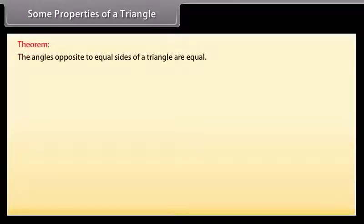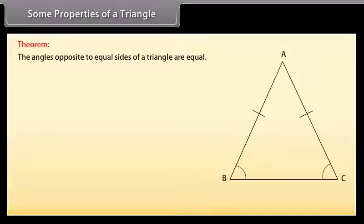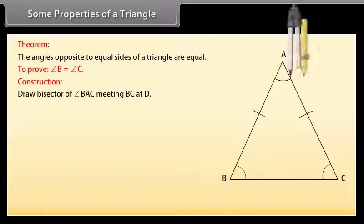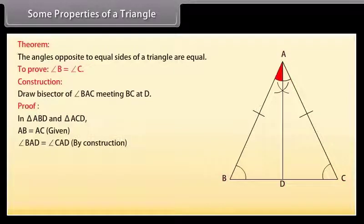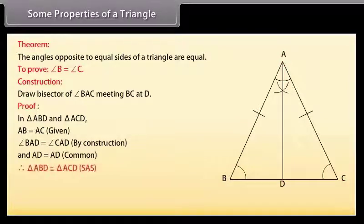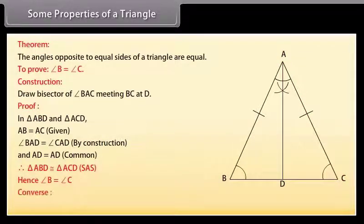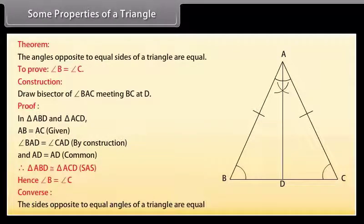Theorem: The angles opposite to equal sides of a triangle are equal. Given is a triangle ABC in which AB is equal to AC. We have to prove that angle B is equal to angle C. Construction: Draw the bisector of angle BAC meeting BC at D. Proof: In triangle ABD and triangle ACD, AB is equal to AC (given), angle BAD is equal to angle CAD (by construction), and AD is equal to AD (common). Therefore, by SAS rule, triangle ABD is congruent to triangle ACD. Hence, angle B is equal to angle C. The converse of the above theorem is also true, which says that the sides opposite to equal angles of a triangle are equal.